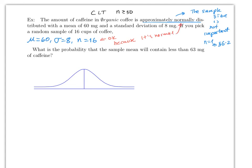Here the mean is still 60 and the standard deviation is still 8, but now n = 16, which is less than 30. That's okay because the distribution is stated to be normal. We still use the same formula: z = (√n)(x̄ − μ) / σ. The question asks: what is the probability that the sample mean x̄ is less than 63 milligrams?